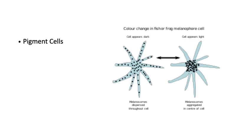Pigment cells contain pigment. These are stellate cells with branching processes. The cytoplasm contains pigment granules, mostly melanin. These cells are of neural crest origin and are present in the skin and uveal tract. They protect the tissue against the harmful effects of UV rays.